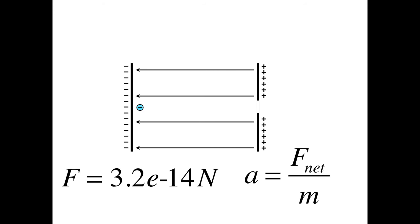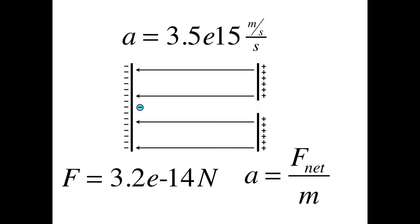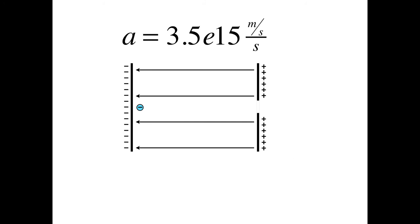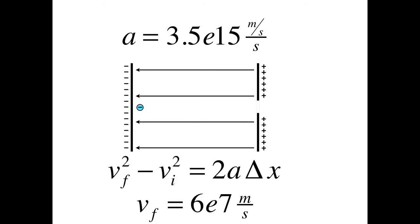Once we have the force, we can find the acceleration of the charge using Newton's second law, using the force we just found and the mass of an electron. We get an acceleration of 3.5 × 10¹⁵ meters per second squared. Using that acceleration and the kinematic equations, remembering that the gap between the plates is 5 centimeters, we get a final speed of the electron of 6 × 10⁷ meters per second.